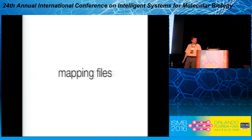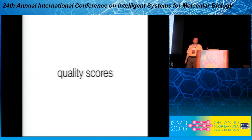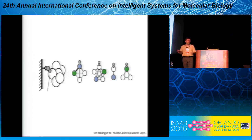Where it gets interesting is how you deal with the issue of things having variable quality and not being comparable to each other. That's where the concept of quality scores becomes very important. The first thing we do is develop what we call raw quality scores — quality scores for a specific type of data — for example, looking at something like affinity purification assays.